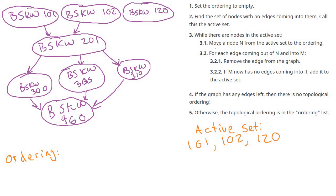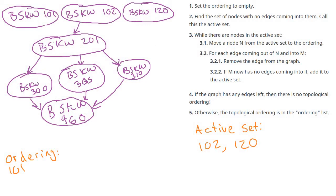While there are nodes in the active set, pick one and move it to the ordering. We pick 101 and move it. Then for each edge leaving 101, we remove that edge from the graph. We check if the destination, 201, now has no incoming edges — it doesn't yet, so we don't add it to the active set. Next we take 102, move it to the ordering, remove its outgoing edge, and now 201 has no incoming edges, so we add 201 to the active set.